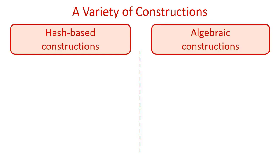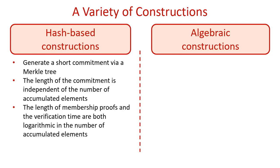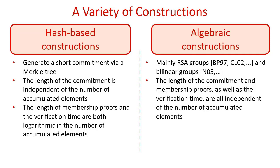Known constructions of accumulators can be roughly classified into two categories: hash-based constructions and group-based constructions. Hash-based constructions generate a short commitment via a Merkle tree. The length of the resulting commitment is independent of the number of accumulated elements, and the length of membership proofs and the verification time are both logarithmic in the number of accumulated elements. Group-based constructions, exploiting the structure provided by their underlying groups, lead to accumulators in which the length of the commitment, the length of membership proofs, and the verification time are all independent of the number of accumulated elements.